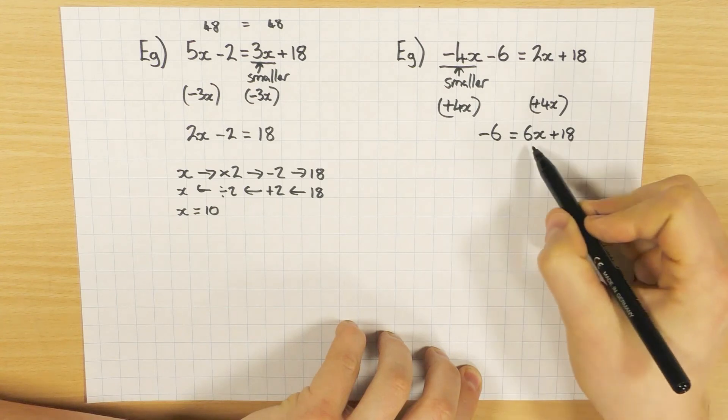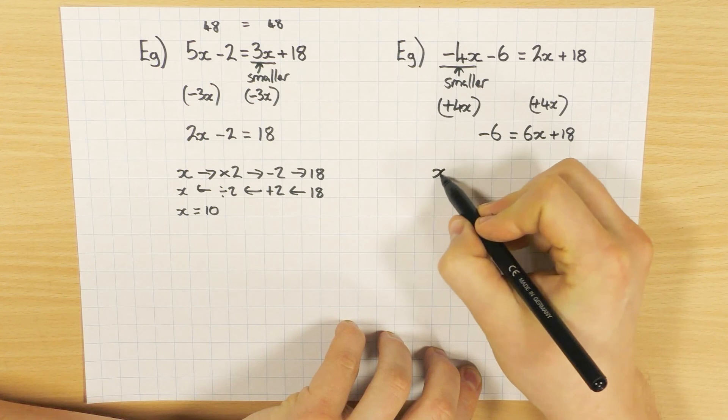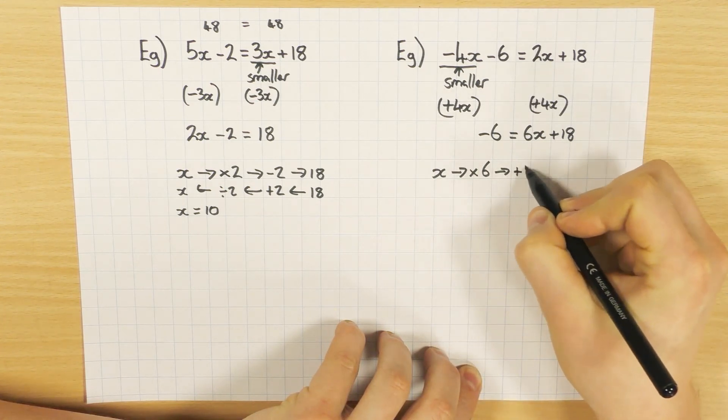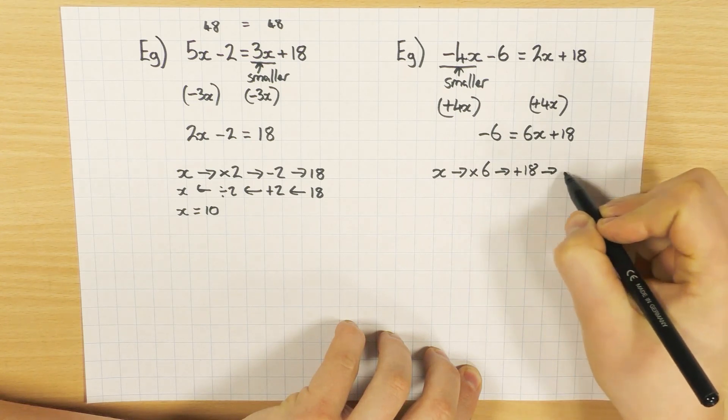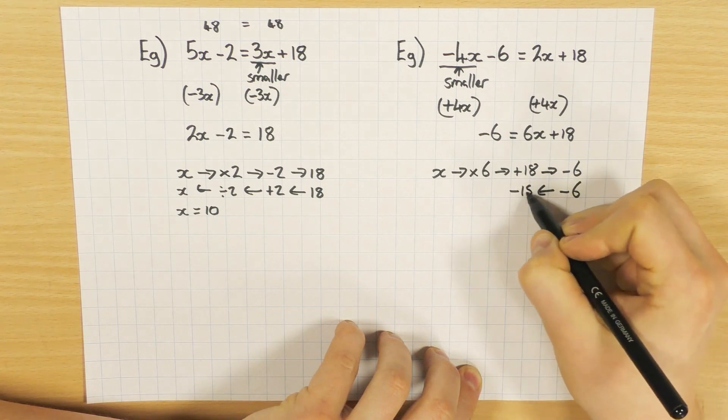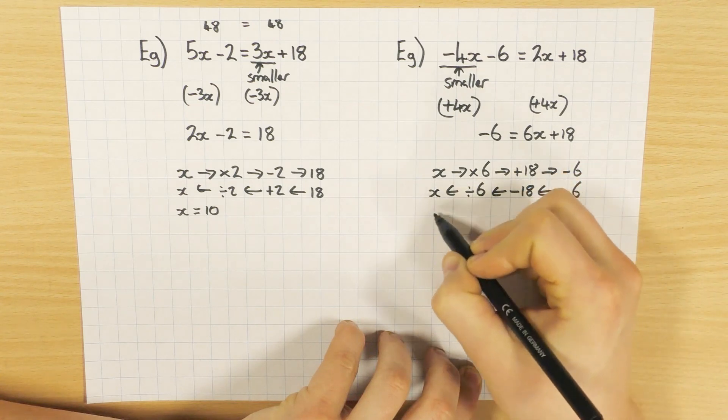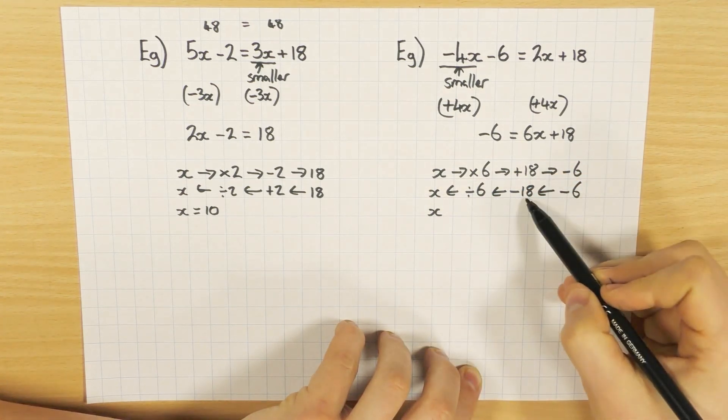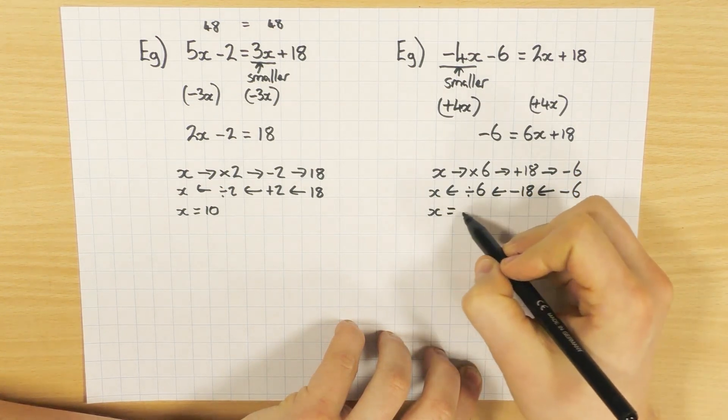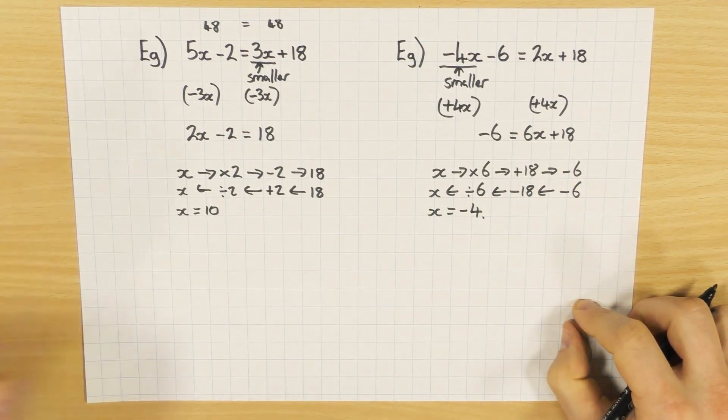And now you can do the flow chart again. Don't be put off by the fact the x is on this side, it makes zero difference. You just straight up flow chart. So x times by 6, plus 18, and that equals minus 6. So minus 6, take away 18, divided by 6, gets me back to x. So minus 6 minus 18 is minus 24. Minus 24 divided by 6 is minus 4. So hopefully that helps solving equations using the flow chart.